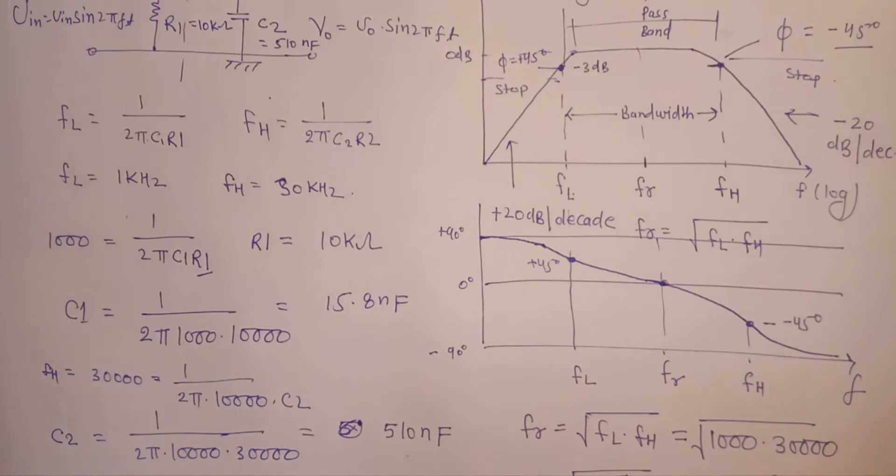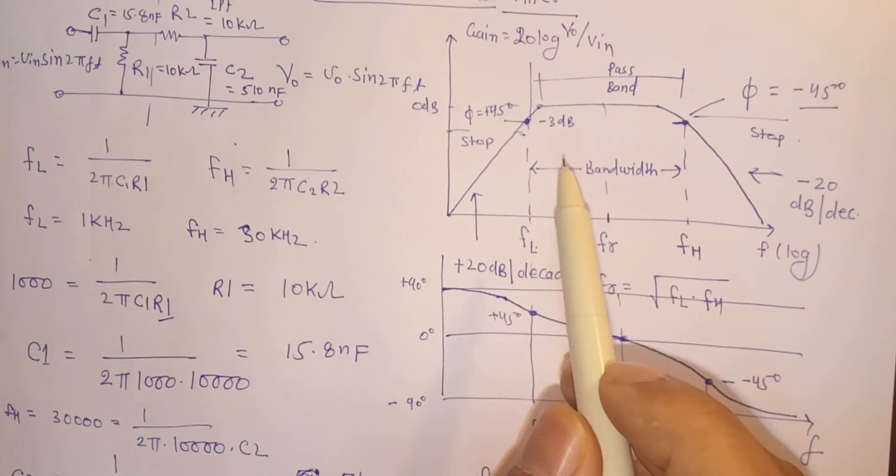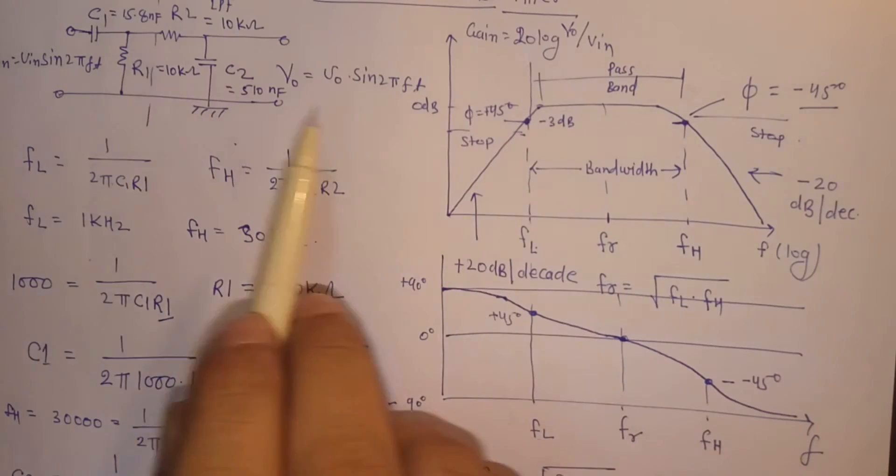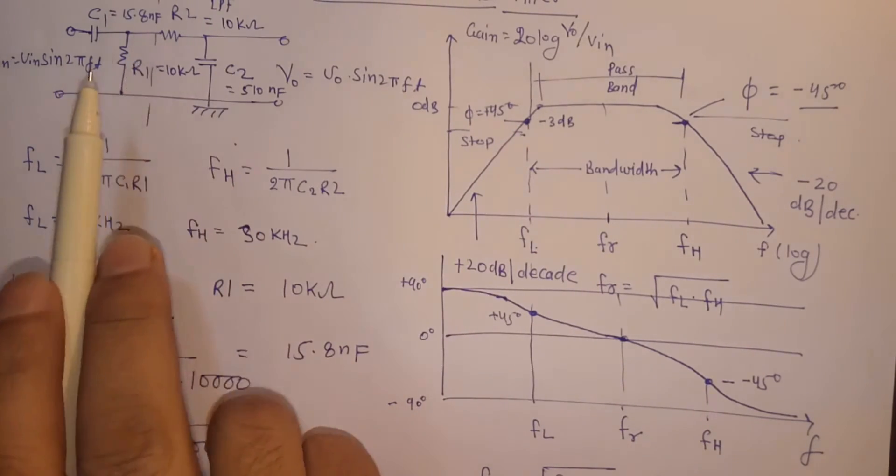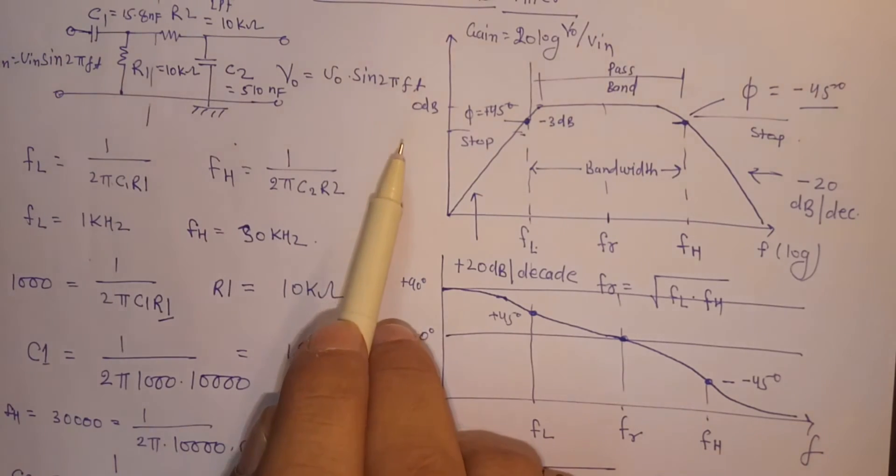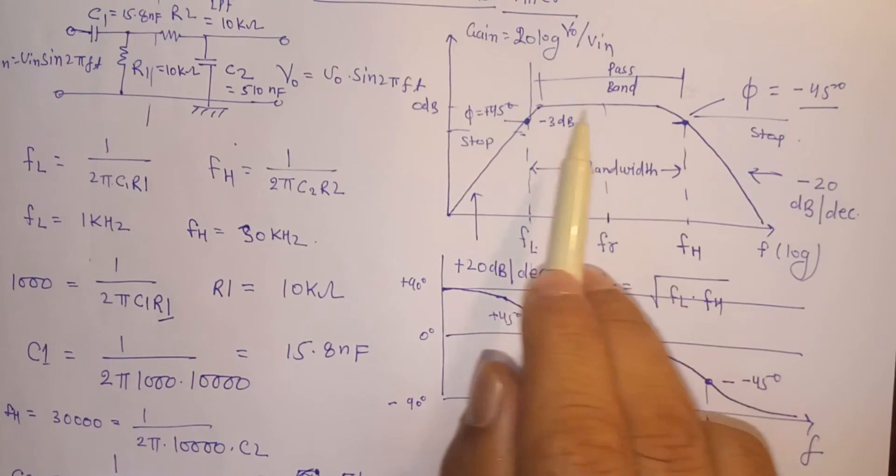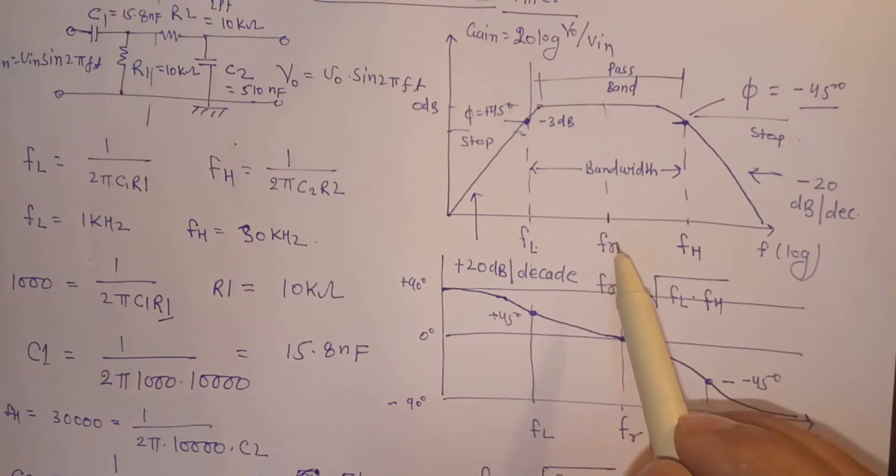To summarize, a simple passive bandpass filter can be made by cascading together a single low pass filter and high pass filter. The frequency range is between the lower cutoff and the higher cutoff, and the width of this range is known as the bandwidth. The center or resonant frequency is the geometric mean of the lower cutoff and higher cutoff frequency.